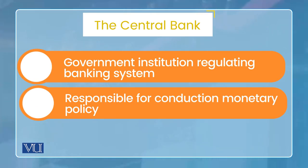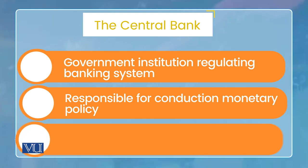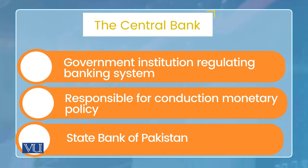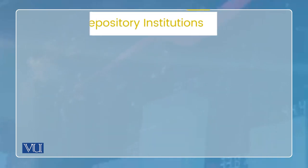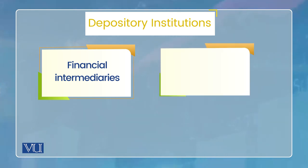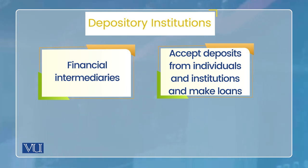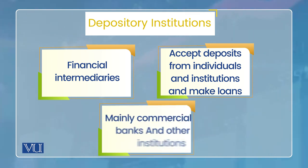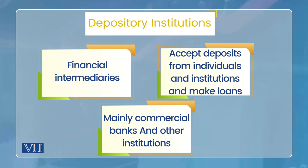Depositor kaun hain, central bank kaun hain — thoda aur detail mein: jab hum central bank ki baat karte hain toh central bank government ka institution hota hai which regulates the banking system. Banking system se muraad yeh hai ki jo other banks system ke andar kaam kar rahi hain central bank ke ilawa — jaise commercial banks hain — toh unko regulate kaun karega? Central bank. Aur central bank ka bunyaadi kaam monetary policy hai. Commercial banks financial intermediaries hain. Intermediary ka matlab yeh hai ke depositors se funds lekar investors ko loan dete hain — they intermediate between depositors and borrowers.